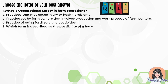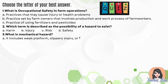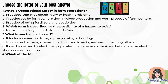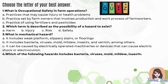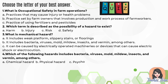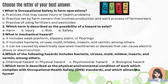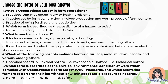Question two: which term describes the possibility of a hazard to exist? A — harm; B — injury; C — risk; D — safety. Question three: what is mechanical hazard? A — includes weak platform and slippery stairs; B — includes bacteria, viruses, mold, mildew; C — caused by electrically operated machineries that can cause electric shock. Question four: which hazard includes bacteria, viruses, mold, mildew, insects, and vermin? A — chemical; B — physical; C — psychosocial; D — biological. Question five: which term describes the physical environmental condition of work complying with occupational health safety standards allowing farmers to perform their job without or with acceptable exposure to hazards? A — harm; B — injury; C — risk; D — safety.